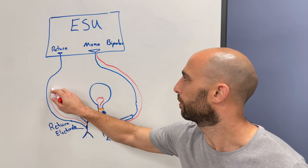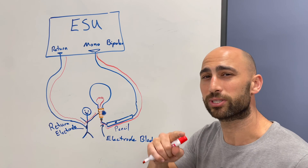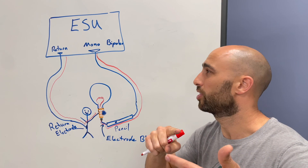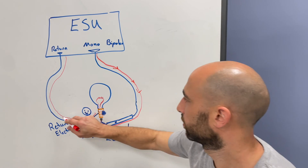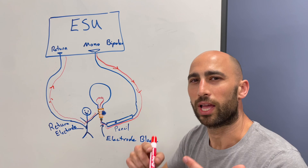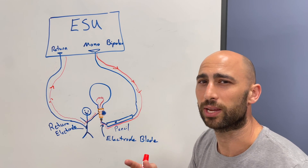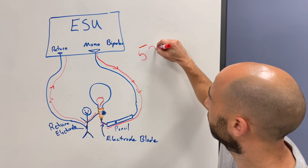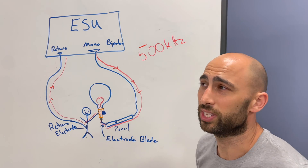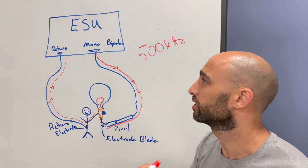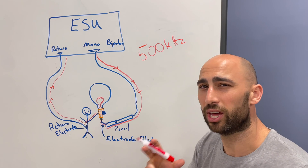Then it goes back into the return port of the ESU, completing the circuit. Because this is AC, the direction of current is going to flip — current goes this direction, then at some point it flips and goes in the opposite direction, but the path stays the same. Most ESUs will have a frequency of around 500 kilohertz, so it's switching extremely fast. Really, both the electrode and the return electrode can be thought of as active.